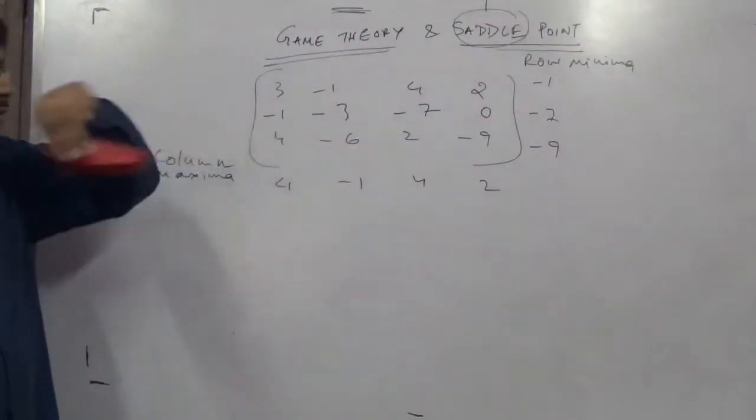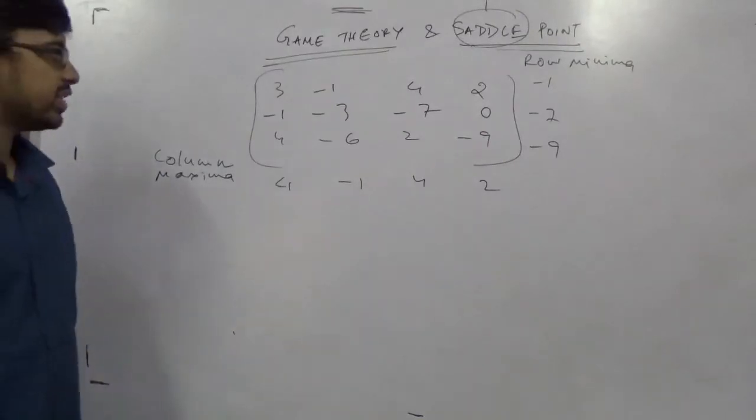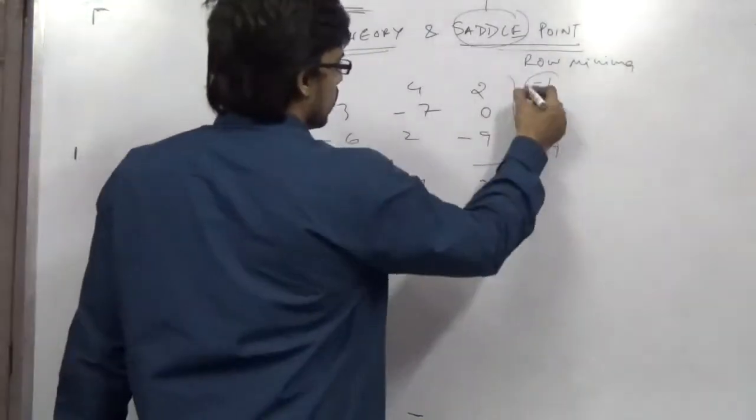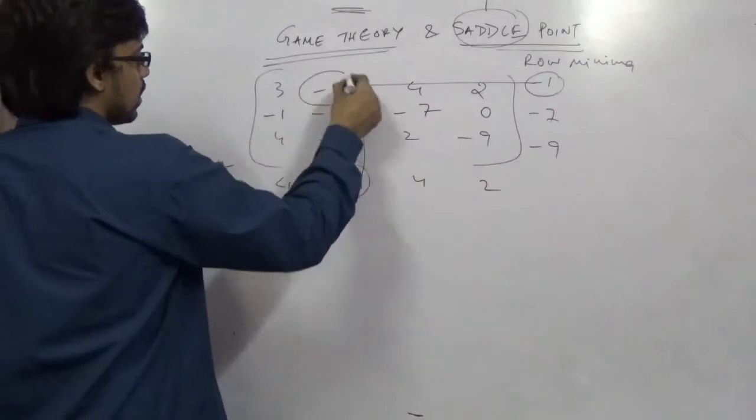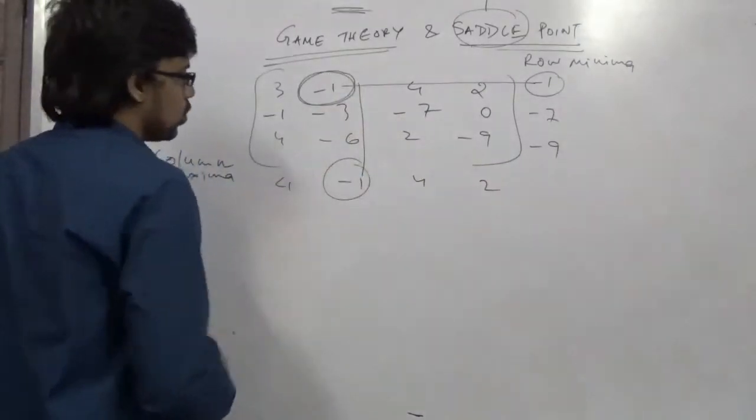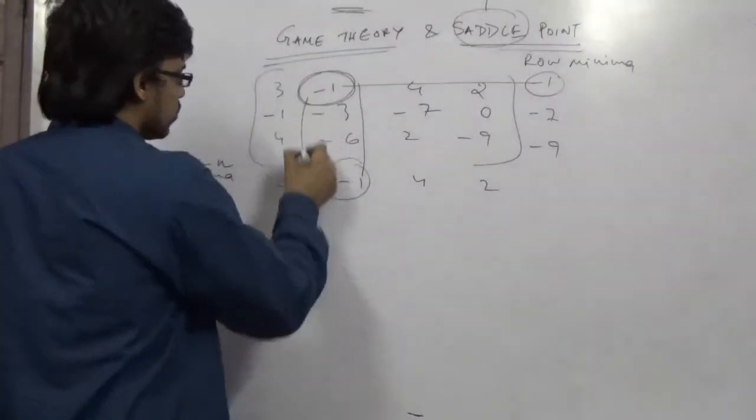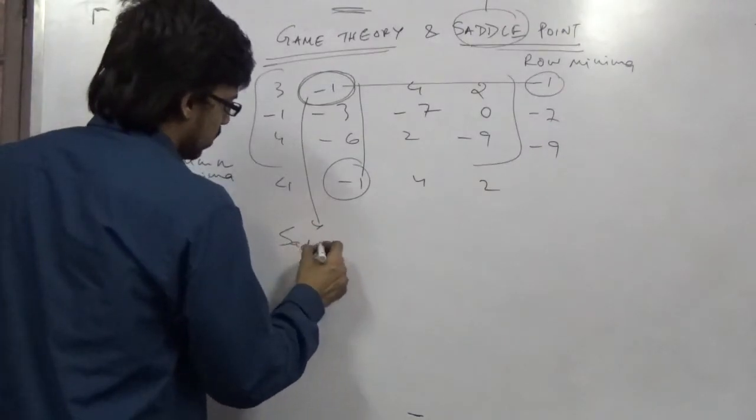So now, row minima and column maxima. Where are they matching? At this point. At minus 1, minus 1. So they need it to here. So the point where row minima and column maxima are matching. This point is called our saddle or stability point.